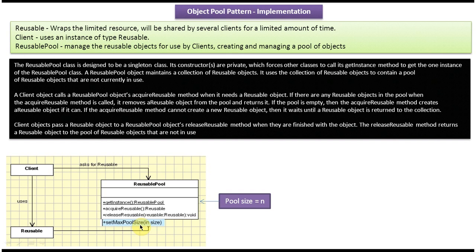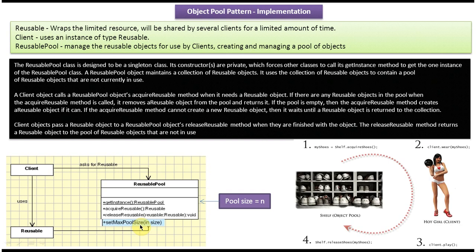Let's look at a real-time example — most of us know how to play bowling. Suppose a client goes to the bowling club. He will go to the bowling shoe area, where shoes are maintained on a shelf — this is the best example of object pool. The client will ask the bowling club member for shoes so he can play. This is equivalent to acquireReusable. The bowling member gives shoes to the client, and the client wears them and plays bowling.